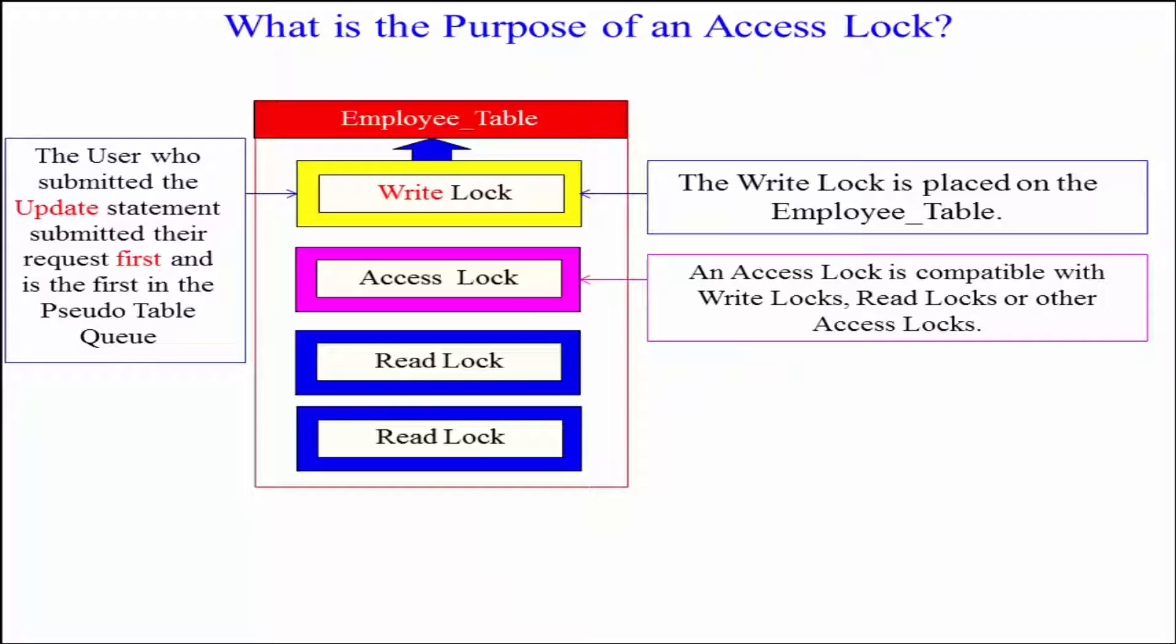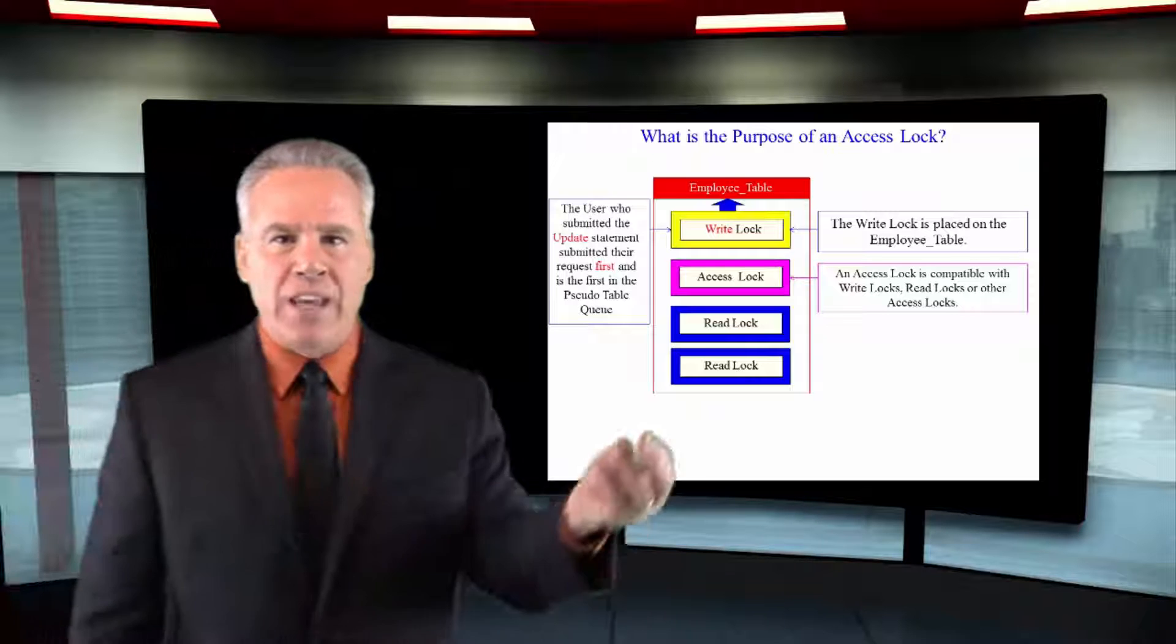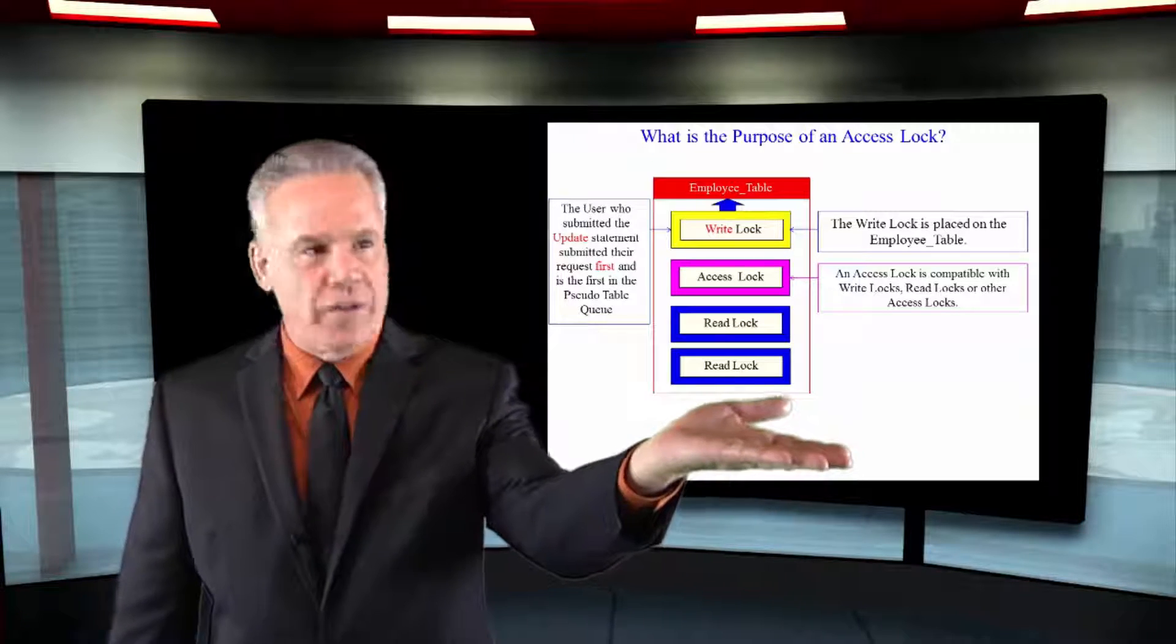So in this case, we can see we're once again in line for the employee table. There's a write lock. Somebody is doing a massive update. The read locks are going to have to wait, but the access lock moves right up and says, I'm going to read while this is being updated.